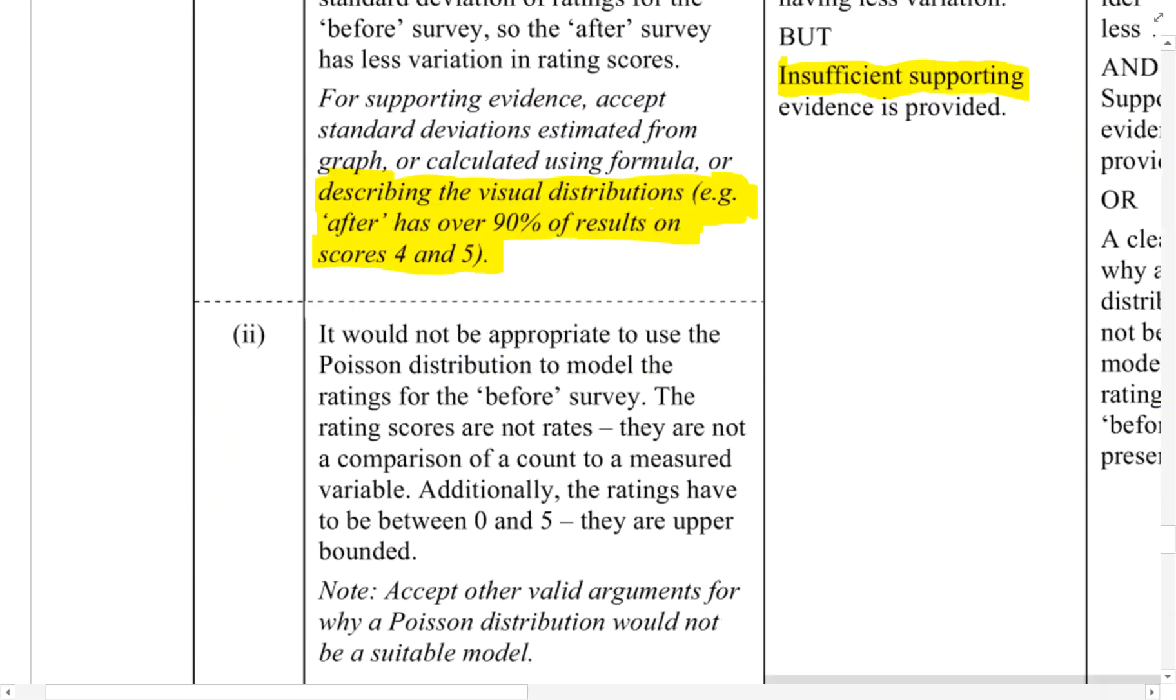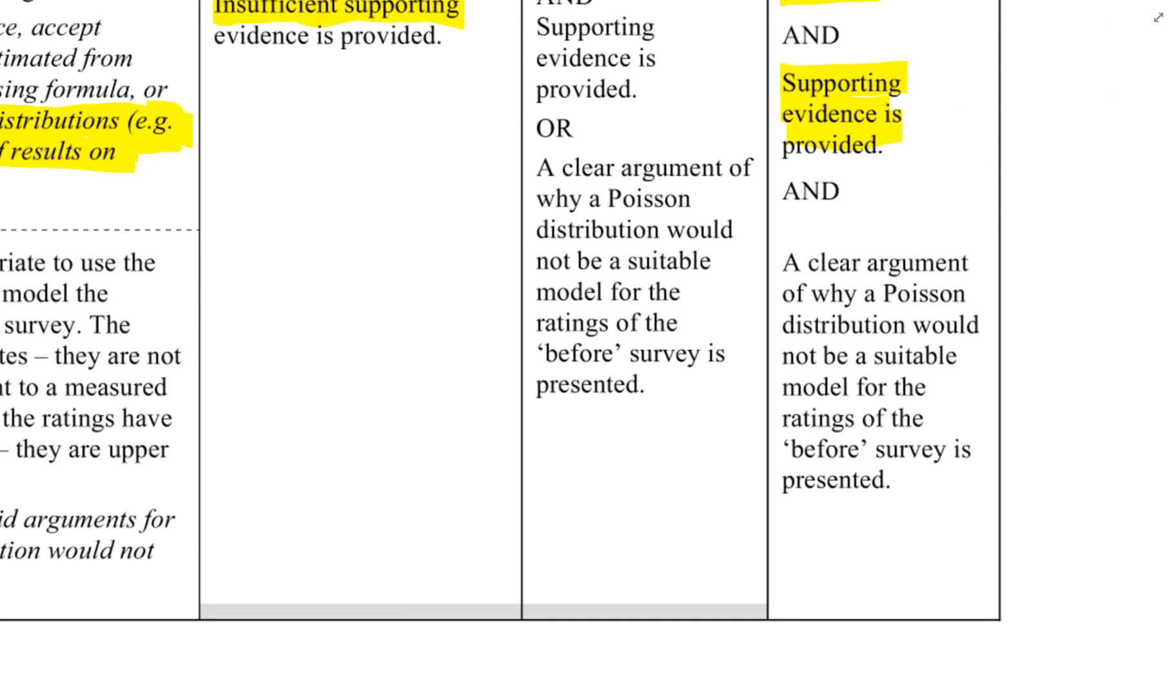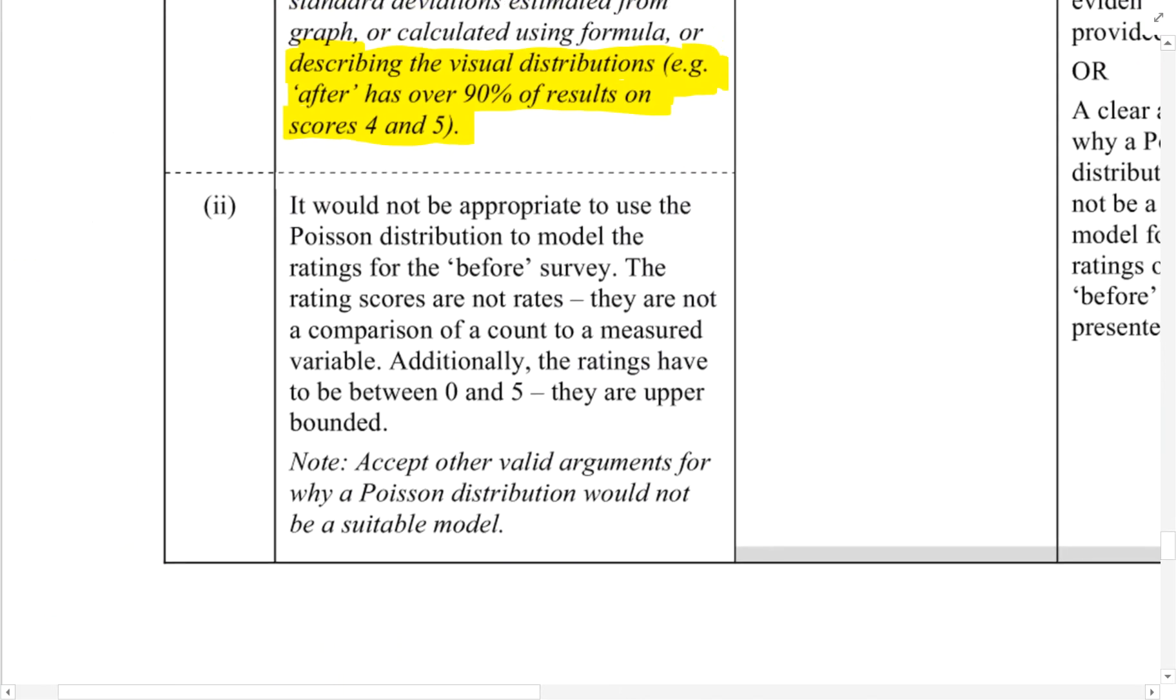Looking at the marking scheme, it says here under excellence a clear argument of why a Poisson distribution would not be a suitable model for the ratings of the before survey is presented. And if we go down to what the model answer says: it would not be appropriate to use the Poisson distribution to model the ratings for the before survey. The rating scores are not rates - they are not a comparison of a count to a measured variable. Additionally, the ratings have to be between zero and five, they are upper bounded. So that was the point that I didn't think of when I wrote that answer, because Poisson remember starts at zero but it has no fixed upper limit to how many times something happens, and here we have a maximum of five.